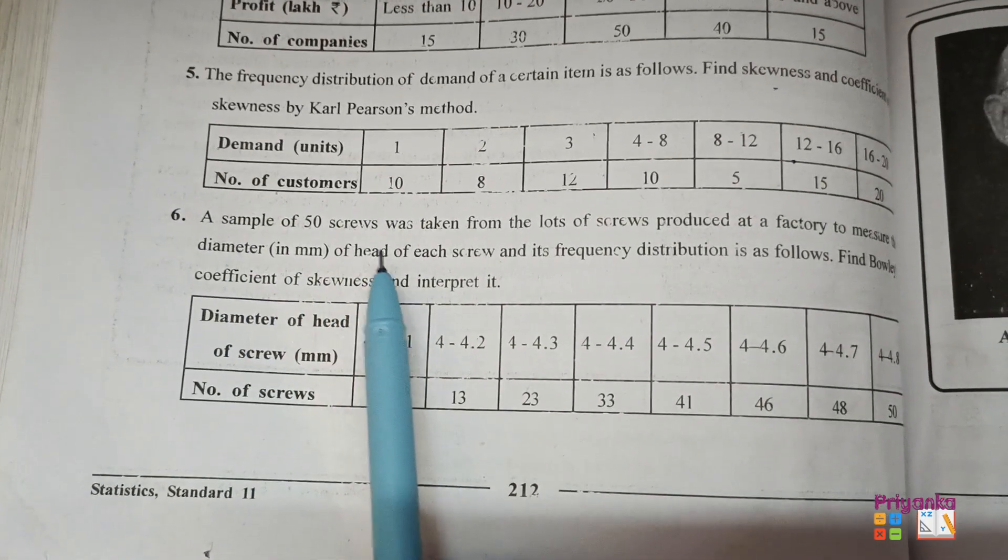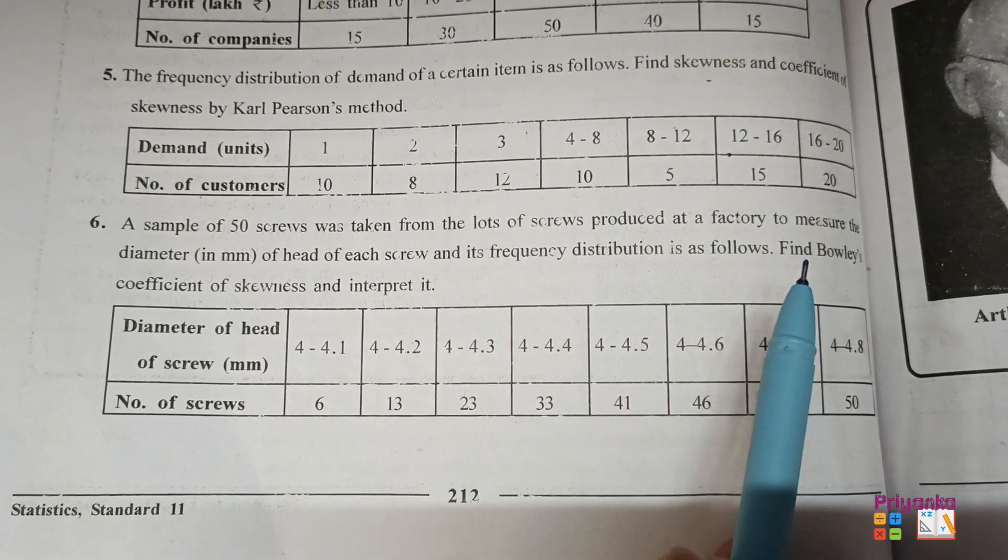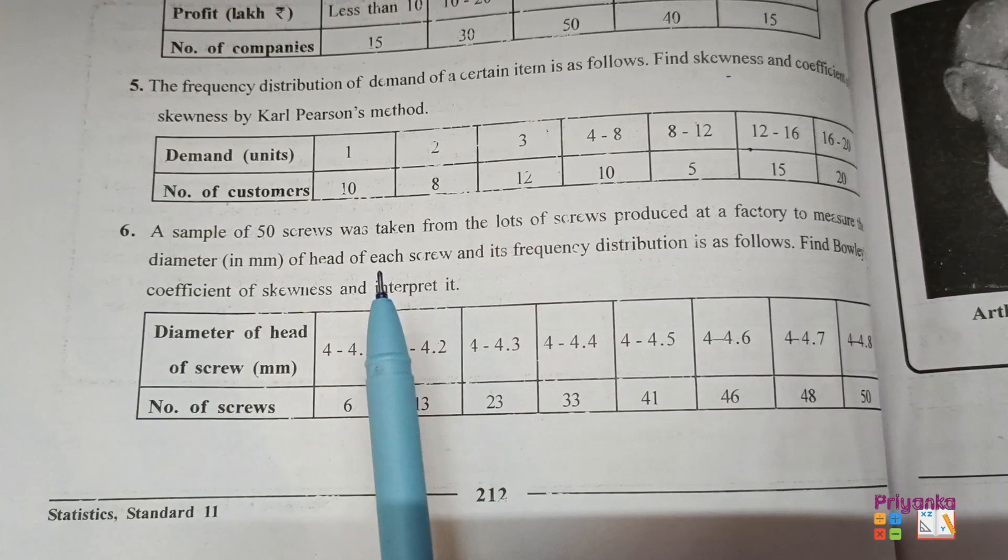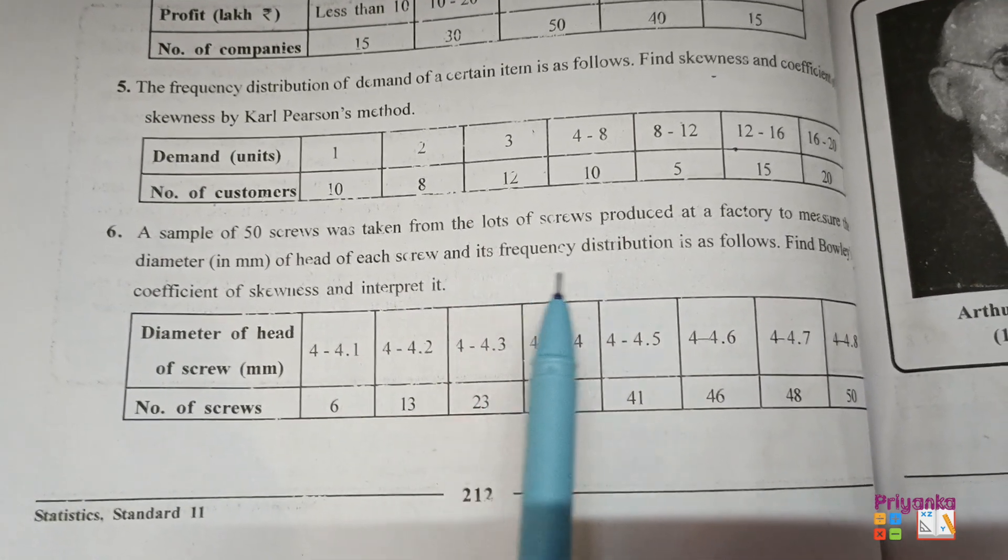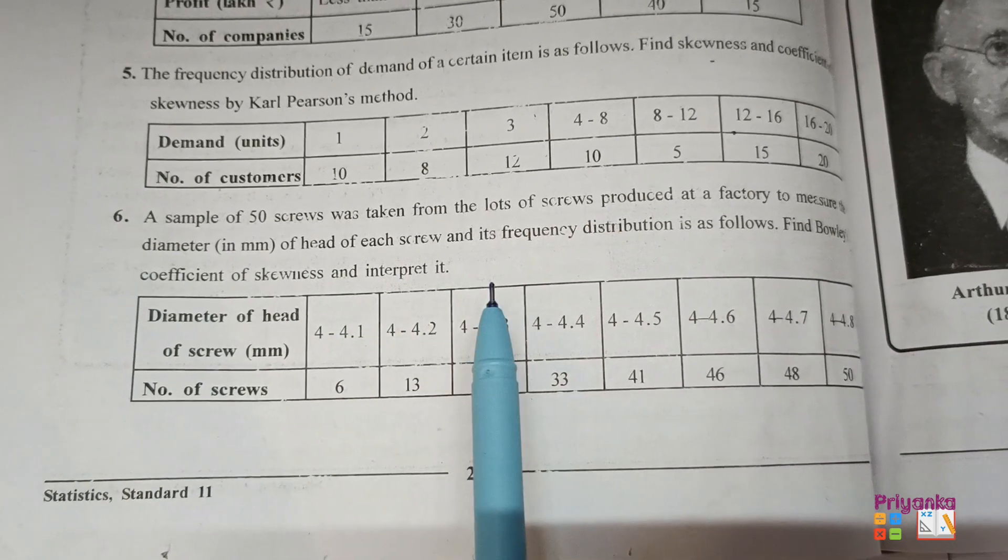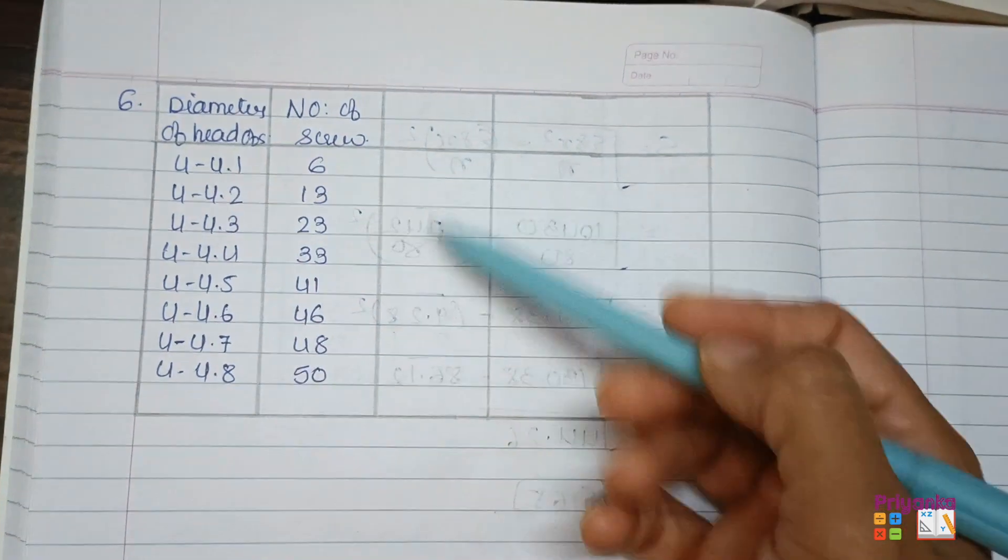Question number 6. A sample of 50 screws was taken from the lots of screws produced at a factory to measure the diameters in millimeters of head of each screw, and its frequency distribution is as follows. Find Bowley's coefficient of skewness and interpret it. So now that's what the information is given in the question, which I have copied over here.